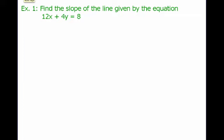Here's example one. We want to find the slope of the line given by this equation, 12x plus 4y equals 8. So what we need to do is we need to solve for y in this equation. And once we've done that, whatever our coefficient of x is, is going to be our slope. So we're going to start. We've got 12x plus 4y equals 8.